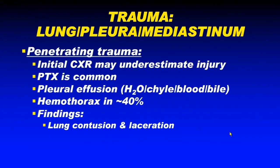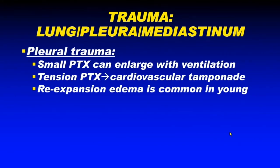In penetrating trauma, initial chest X-rays are very underwhelming, so we almost always do CT scans. Pneumothorax is extremely common; pleural effusion contents can be a combination of water, chyle, blood, or biliary contents based on the location of the penetrating injury. Even small pneumothoraces can enlarge with ventilation, so it is important to identify and document even small pneumothoraces. Tension pneumothorax will cause abrupt cardiovascular tamponade after a certain point.